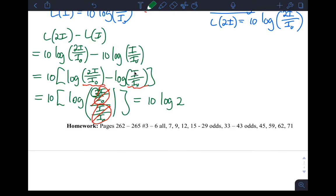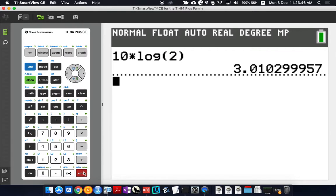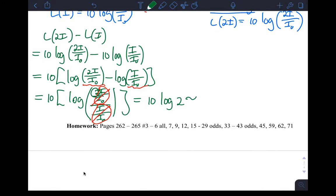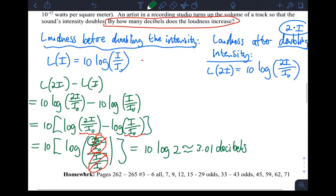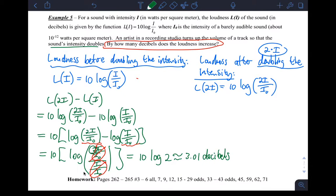And if you put that in your calculator, 10 times log base 10 of 2, we go over here, that's 10 times log base 10 of 2. That gives me about 3.01. So that's about 3.01 decibels. So that means if you double the intensity, okay, the loudness goes up by about 3 decibels. All right, so that's the answer to that one.